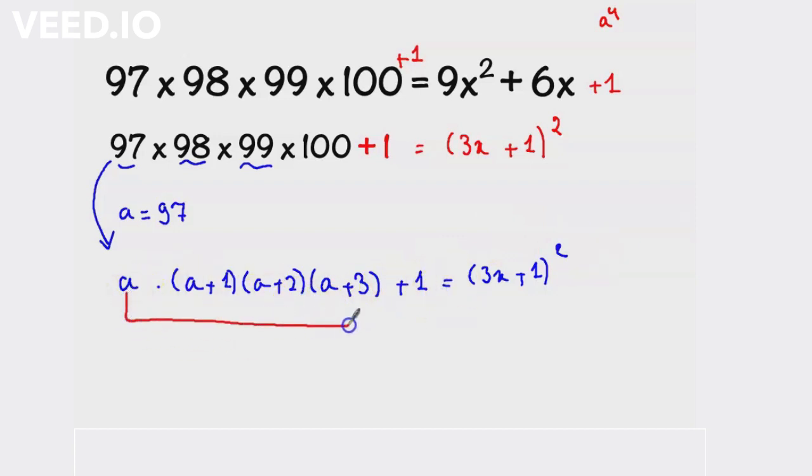What we'll do instead is multiply a times (a + 3) and (a + 1) times (a + 2), and let's see what we will get: a times a gives a², a times 3 gives 3a, multiplied by a² plus 3a plus 2, plus 1 equal to (3x + 1)².